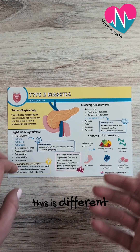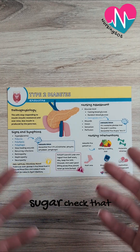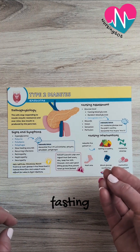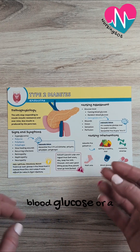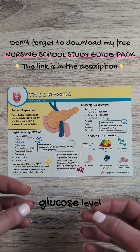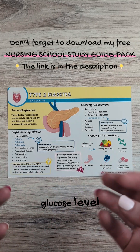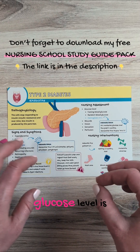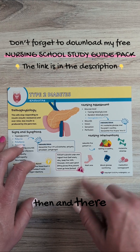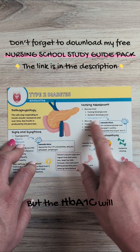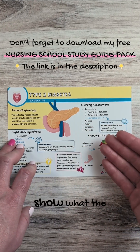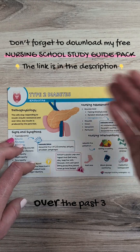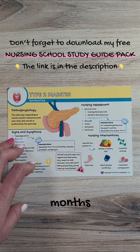This is different than just a regular blood sugar check that we would do with a patient, something like a fasting blood glucose or a random blood glucose level. Those would check what the patient's blood glucose level is right then and there, but the HbA1c will show what the blood glucose level has been over the past three months.